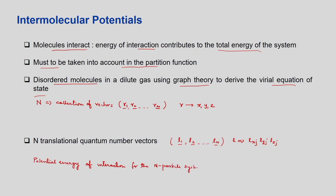The potential energy can be defined as U, which is a function of r1, r2, r3, up to rn — vector quantities. This is the potential energy of interaction for an n-particle system. The collection of vectors can be given by the spatial coordinates along with the translational quantum number vectors l1, l2, and so on.